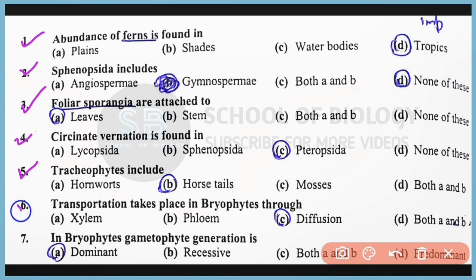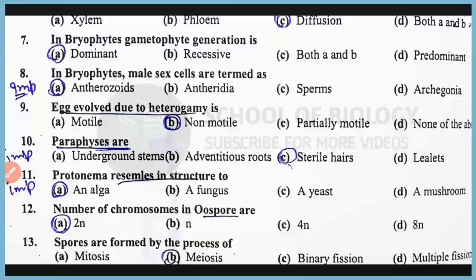Question Number 6: Transportation takes place in bryophytes by means of diffusion. The correct answer is Option C. Question Number 7: In bryophytes, gametophyte generation is dominant. The correct answer is Option A. Question Number 8 — that is very important: In bryophytes, male sex cells are termed as antherozoids.